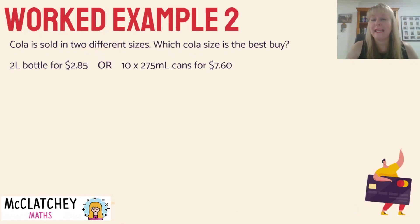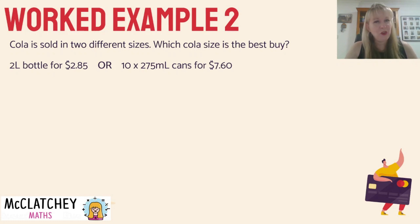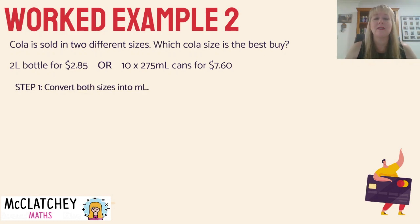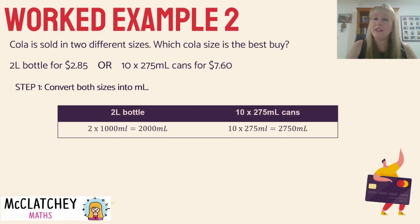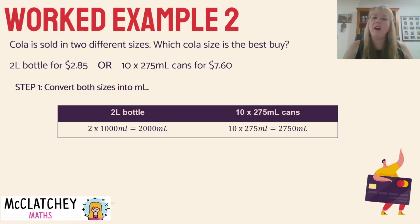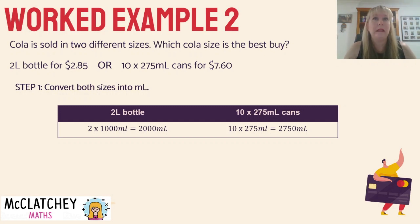Let's move on to our second and last worked example today. Cola is sold in two different sizes — which size is the best buy? We have a two-litre bottle for $2.85, or 10 cans of 275 mL for $7.60. We need to work out which choice saves the most money. First, we make sure both are being compared in the same units — one is in litres, one is in millilitres. So we convert the total quantities into millilitres. It's a really good idea to set out your working in a table with clear columns or subheadings so your teacher can see exactly what you're doing.